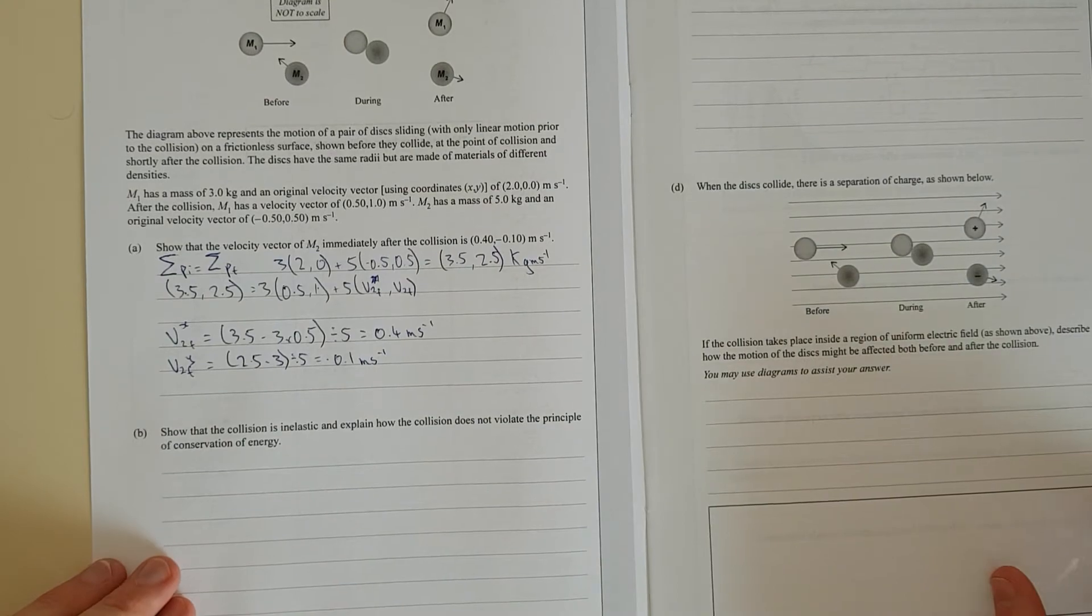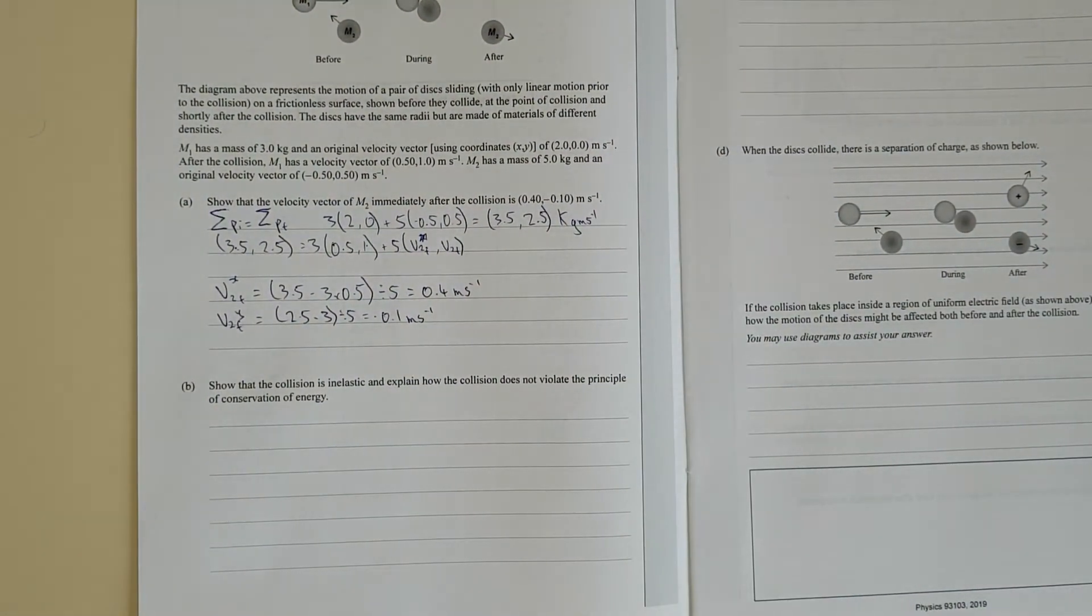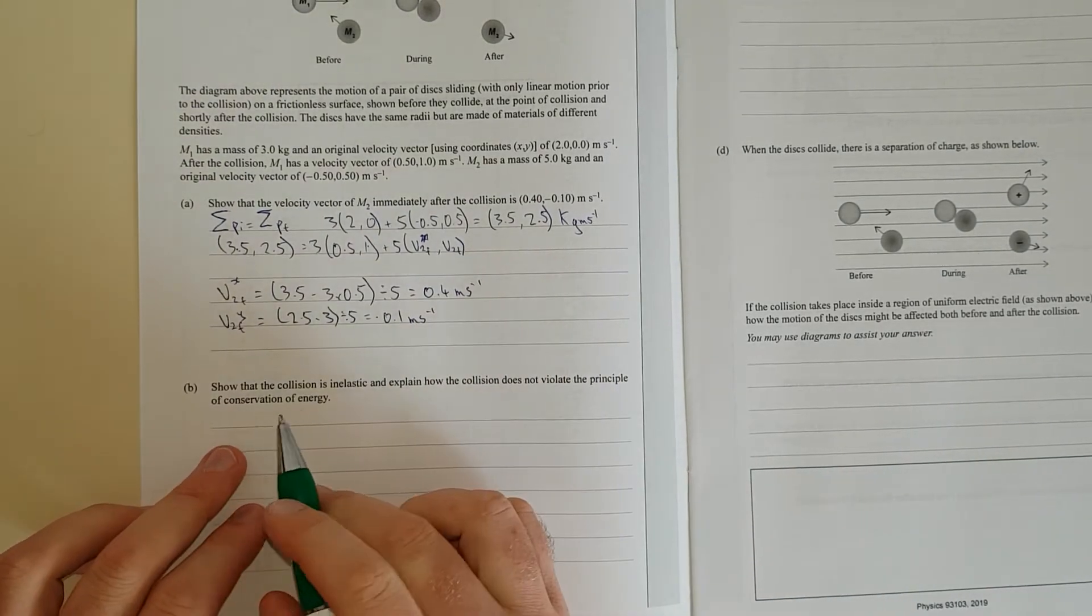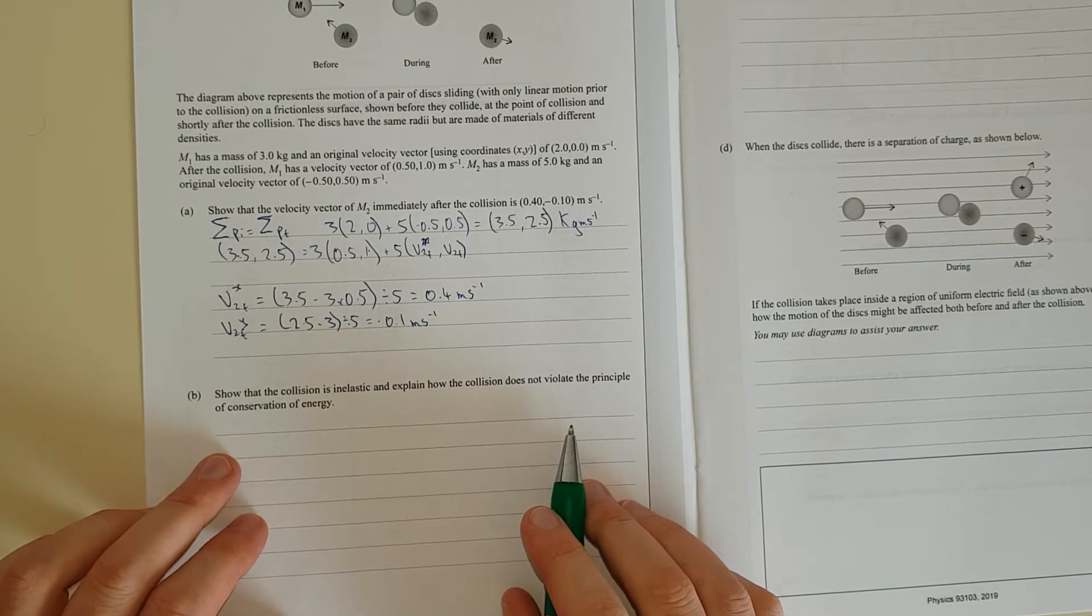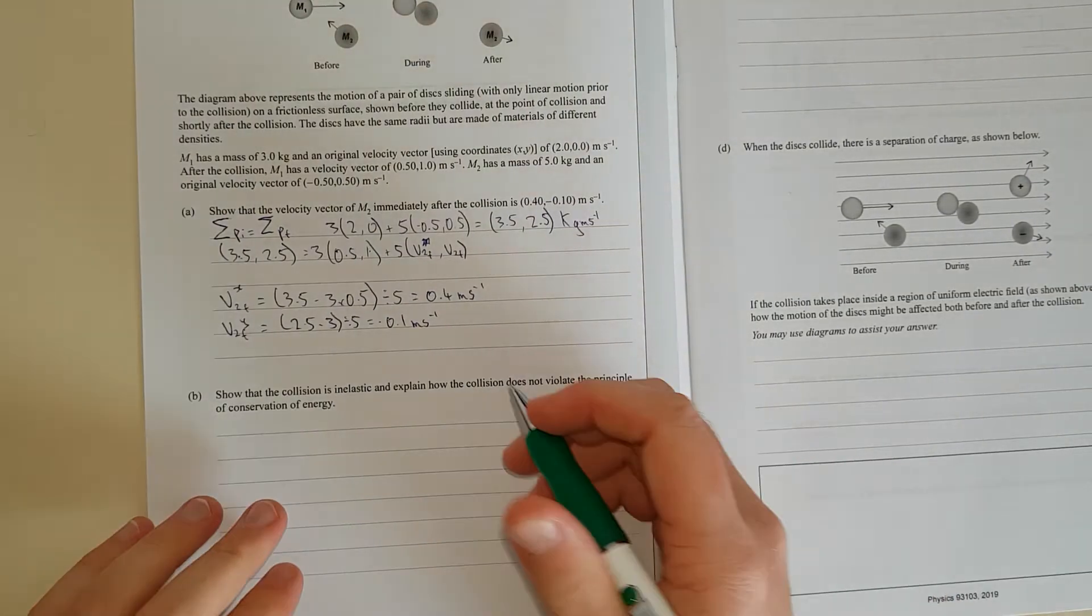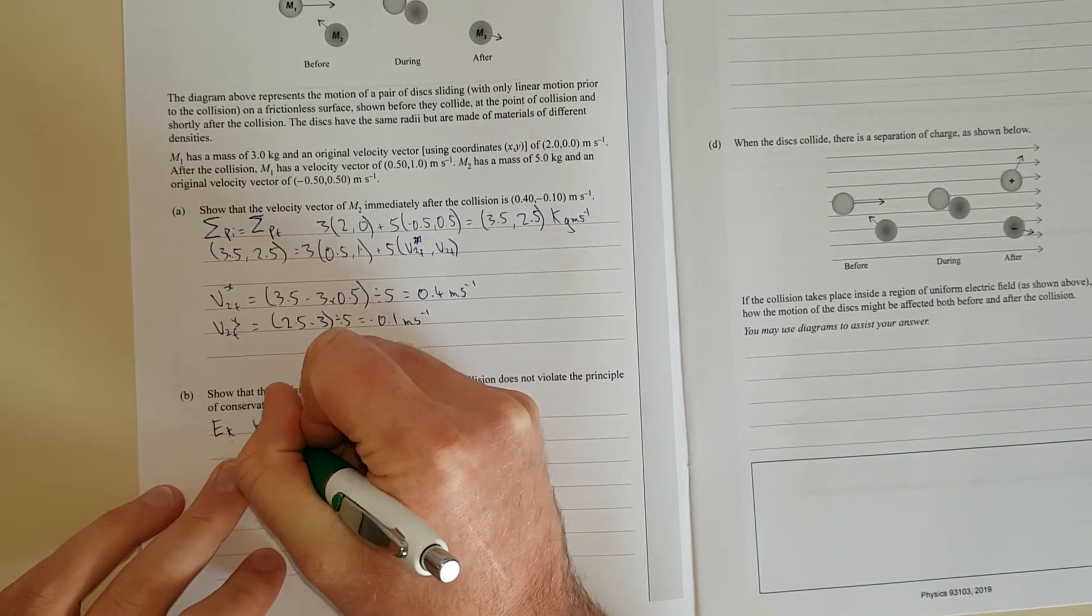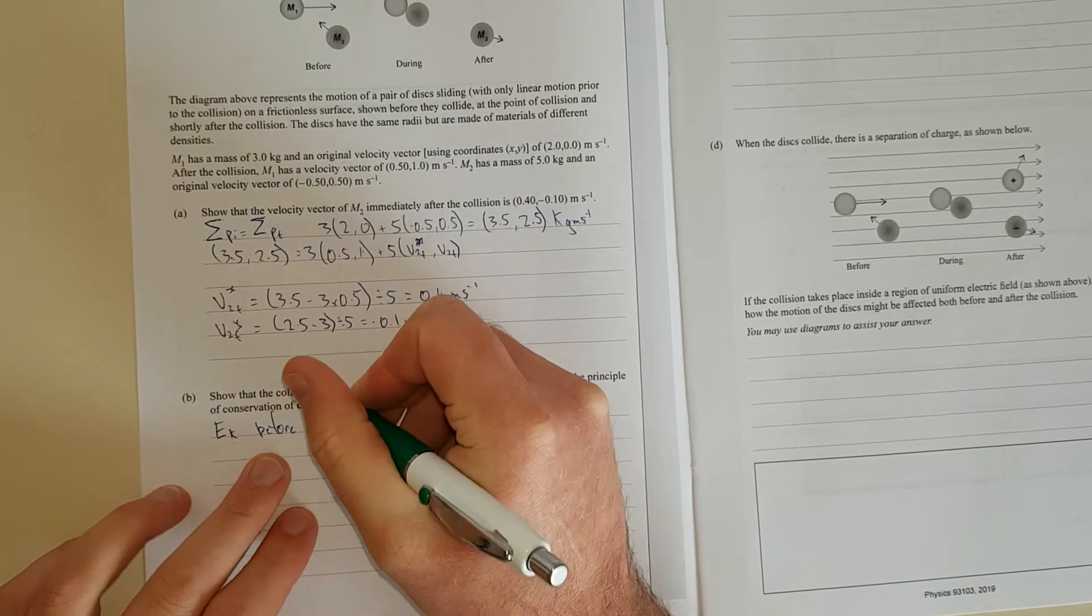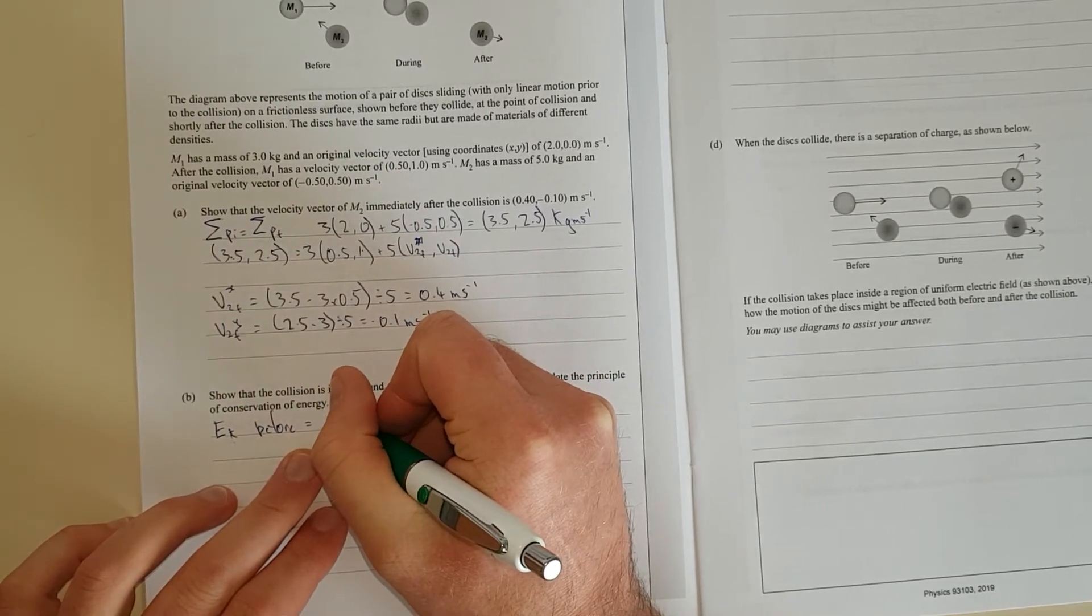So now what we need to do is we need to find the kinetic energy before, find the kinetic energy afterwards, and then just compare the two. Ek before equals Ek1 plus Ek2.